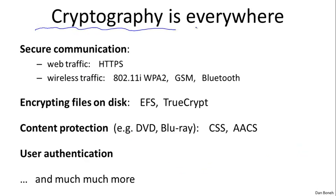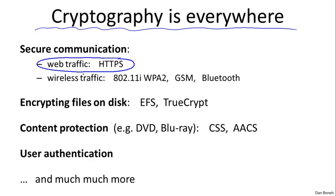By now, I'm sure everybody taking the class knows that cryptography is used everywhere computers are. It's a very common tool used to protect data. For example, web traffic is protected using a protocol called HTTPS. Wireless traffic, such as Wi-Fi, is protected using the WPA2 protocol that's part of 802.11i. Cell phone traffic is protected using an encryption mechanism in GSM. Bluetooth traffic is protected using cryptography, and so on. We're going to see how these various systems work.